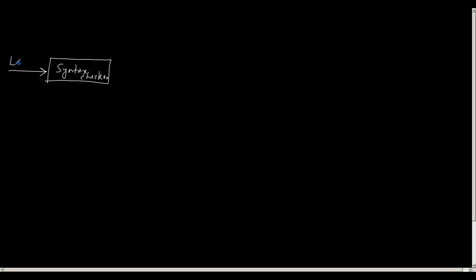So the input to the syntax checker is the list of tokens, and the output is what we call the AST — abstract syntax tree or parse tree.